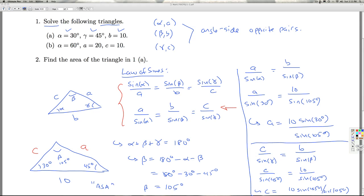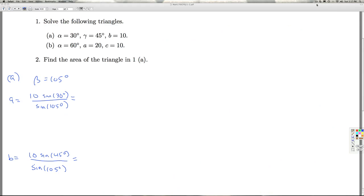Now let's see if we can simplify those. Let's simplify our answers. Beta is 105 degrees. A is 10 sine 30 over sine 105. C is 10 sine 45 over sine 105.